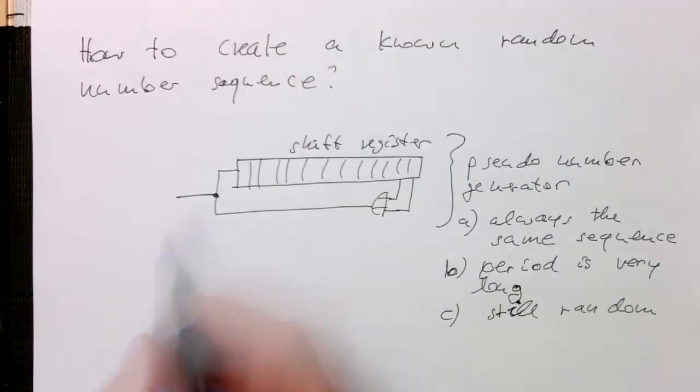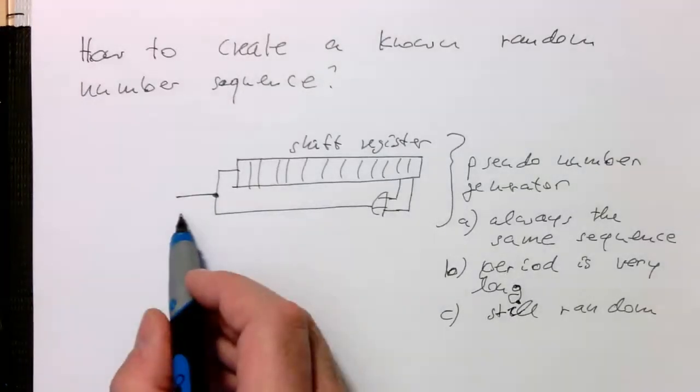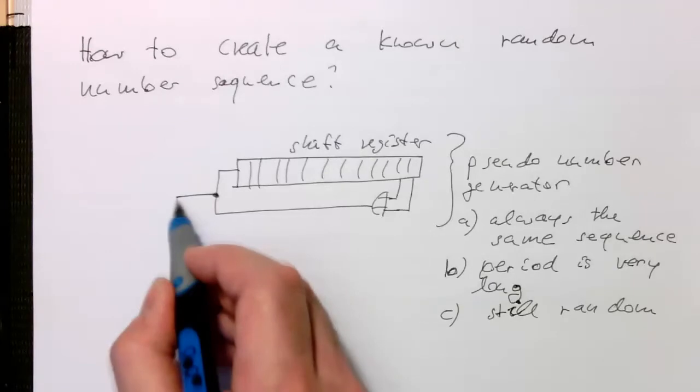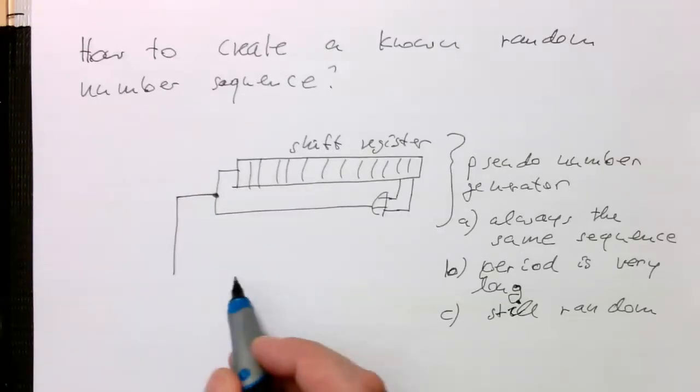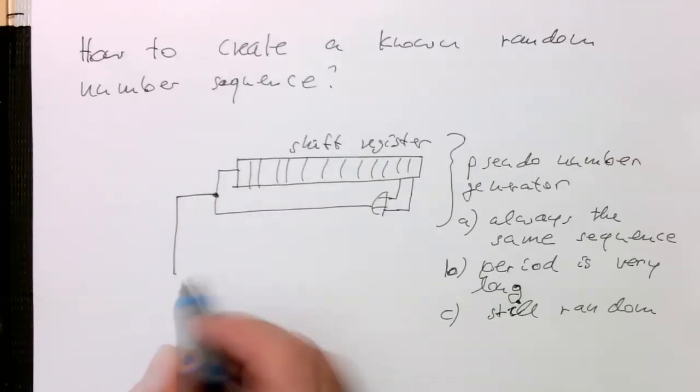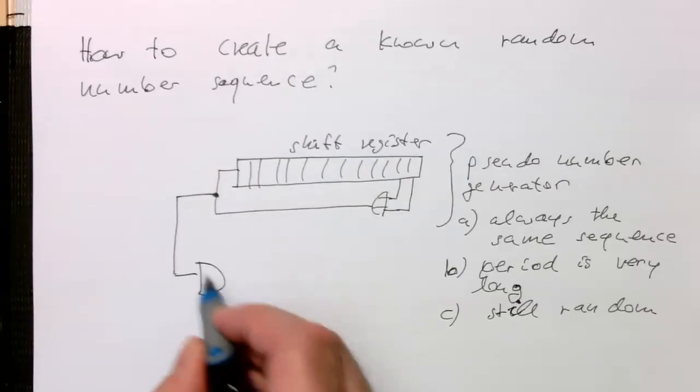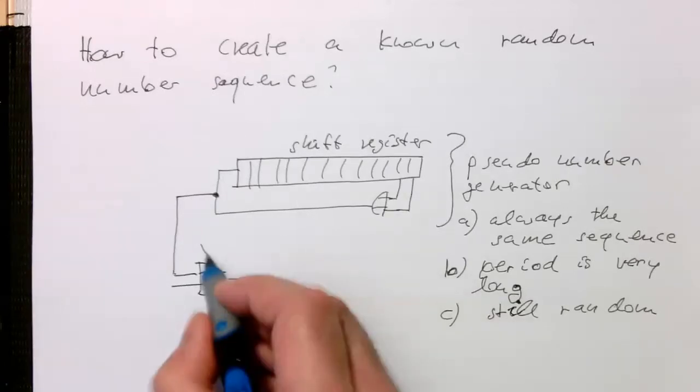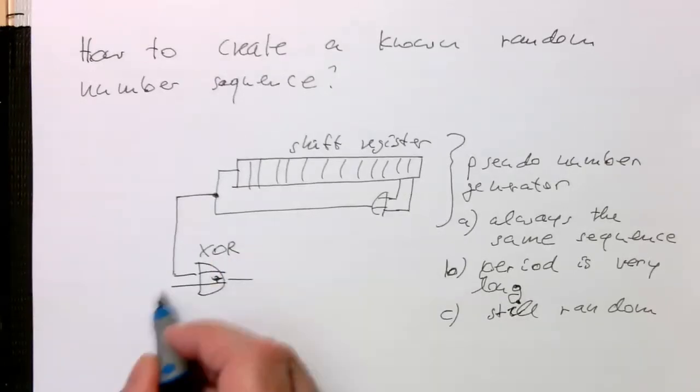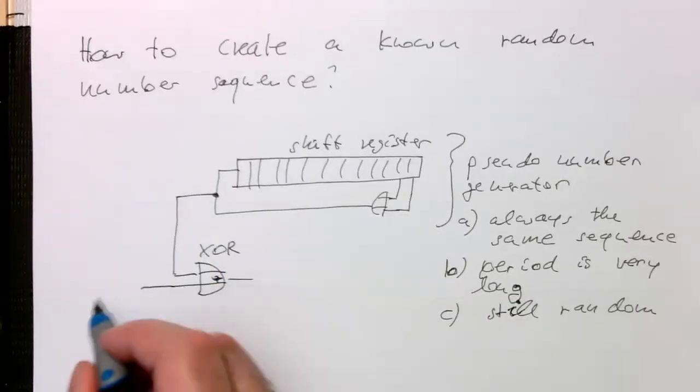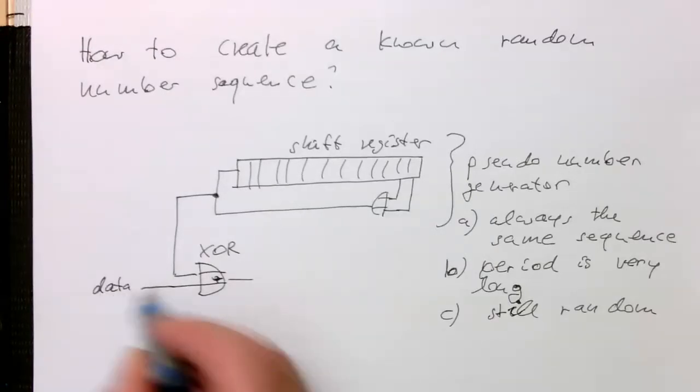And so therefore, if we are taking this output of this shift register here, and so we use our XOR gate here. So that's our XOR. And so we send our data in here.